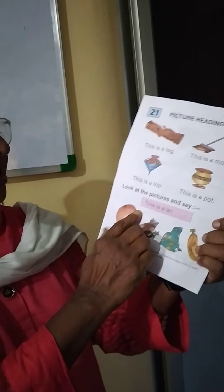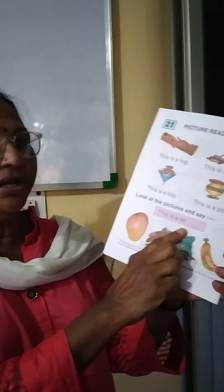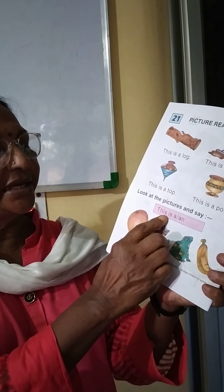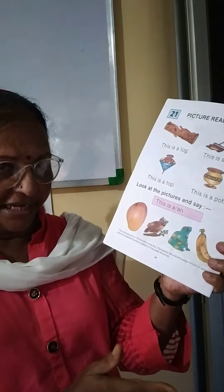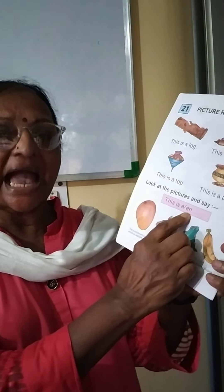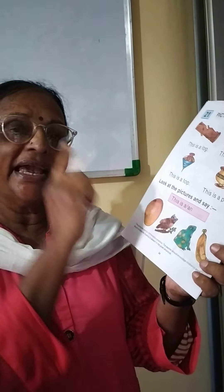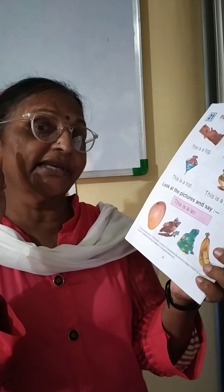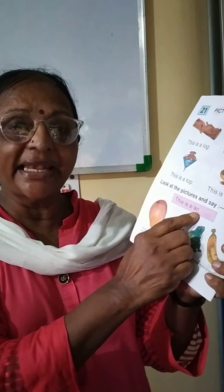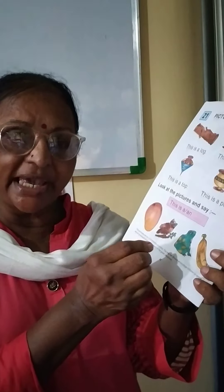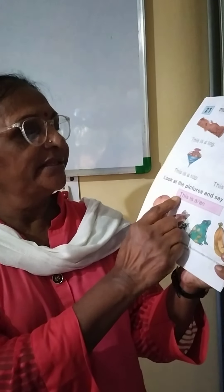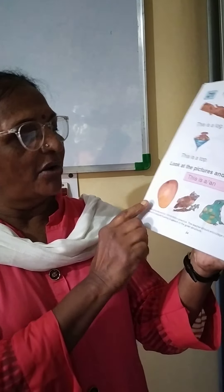Now see this pink color, children. What is written here is 'this is a.' There is a line with a slash, and the next word is 'an.' We have done 'a' and 'an' in lesson 6. So here we have 'a' and 'an' — where to use 'a' and where to use 'an.'